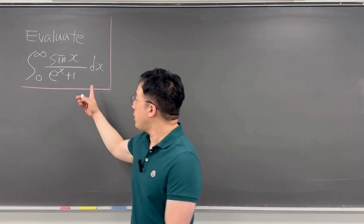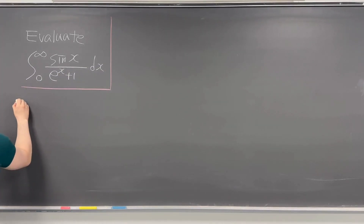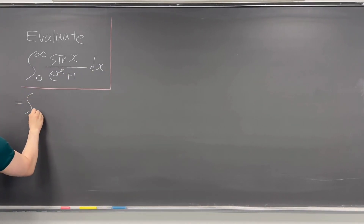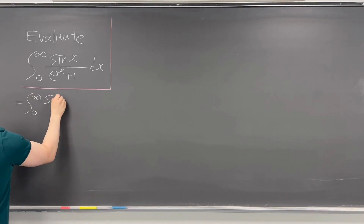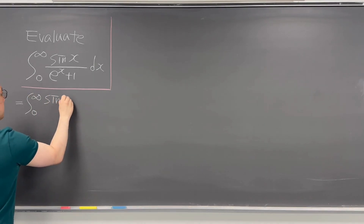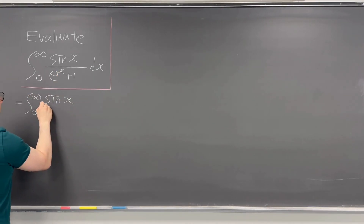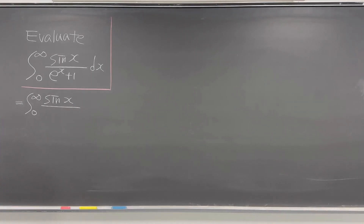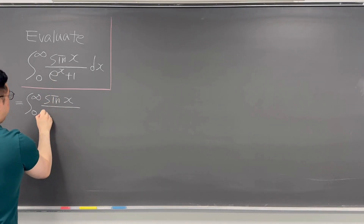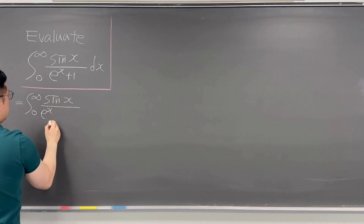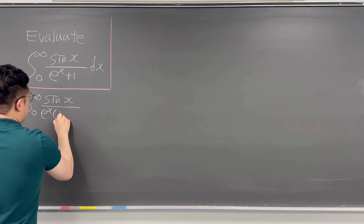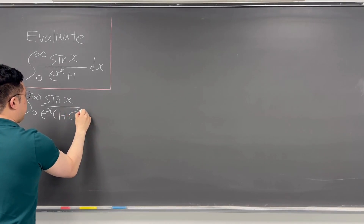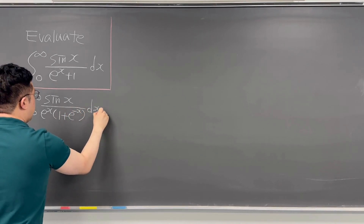So first of all, I'll be rewriting this integral. The integral is from 0 to infinity, and we have sine of x still, and especially for this denominator, I'll be rewriting the denominator as e to the power of x times parenthesis 1 plus e to the power of negative x, and dx.